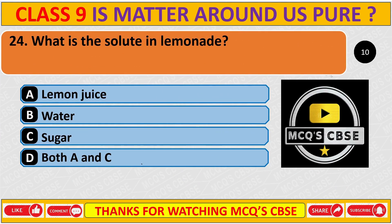What is the solute in lemonade? The correct answer is D: both A and C — it contains lemon juice as well as sugar.